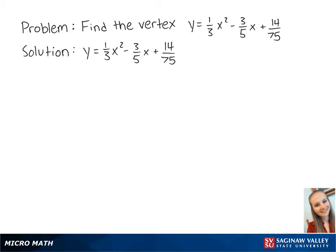For this problem, we want to find the vertex of the equation y equals one-third x squared minus three-fifths x plus 14 over 75.